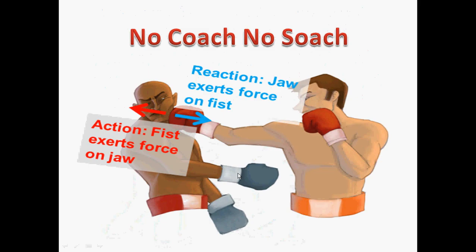Consider the next example. This young player, who is not well trained and has not taken advice from a coach — no coach, no guidance. A punch is being directly hit on his face. You can understand this from Newton's third law, which says every action has an equal and opposite reaction. The fist exerts force on the jaw, and there is an equal opposite reaction by the jaw on the fist.